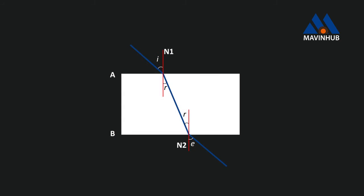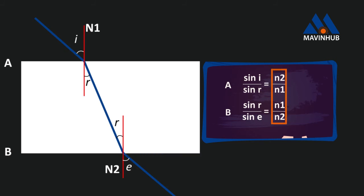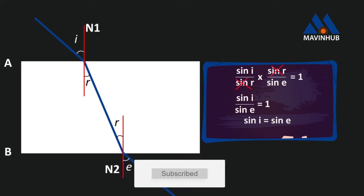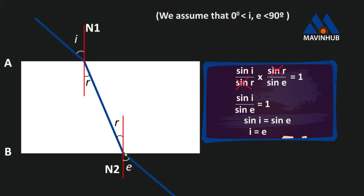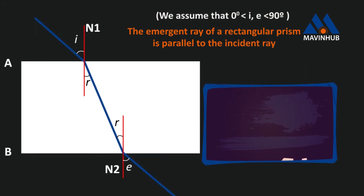Let's come back to the rectangular prism. From Snell's law, we know that sin I over sin R equals N2 over N1 at surface A, and sin R over sin E equals N1 over N2 at surface B. The right-hand sides of the equations at A and B are reciprocals of each other. Hence, multiplying them gives us the following. Cancelling sin R on the left-hand side, we get sin I over sin E, which equals 1. Therefore, sin I equals sin E, and I is therefore equal to E. In conclusion, the emergent ray of a rectangular prism is parallel to the incident ray. The angles can be calculated using a protractor.